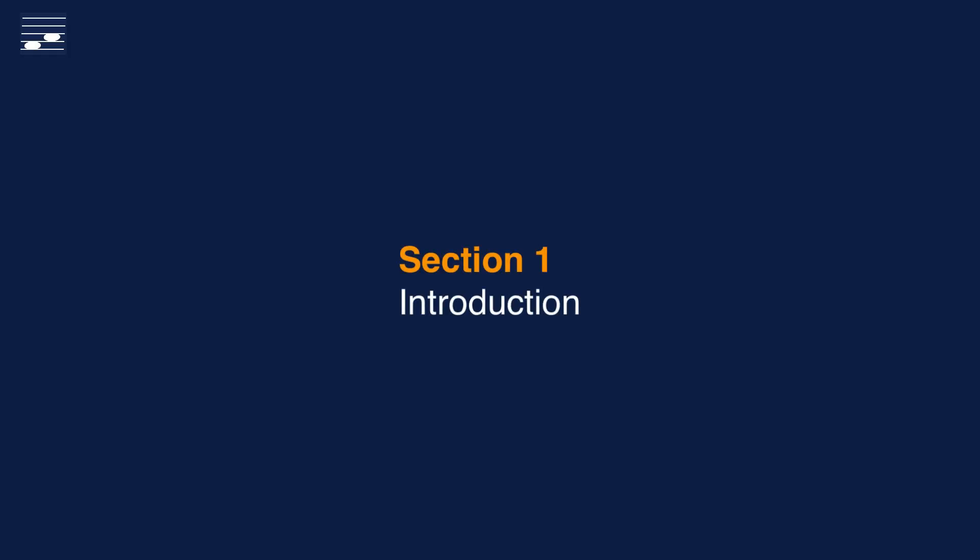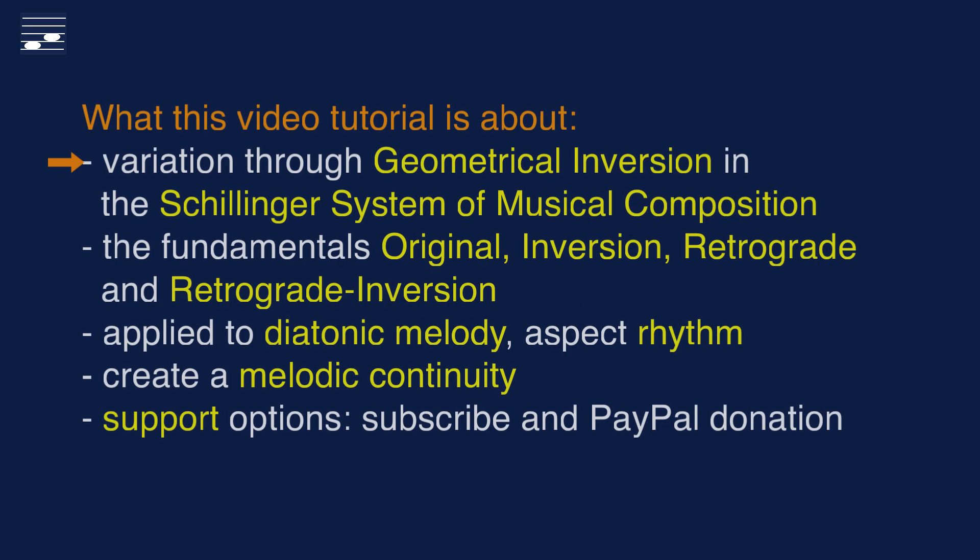In the Schillinger system, variation may be obtained through geometrical inversion. This comprises the set of four fundamental forms: original, inversion, retrograde, and retrograde inversion.